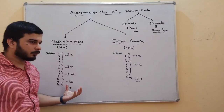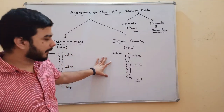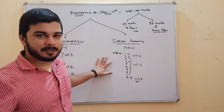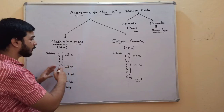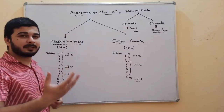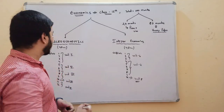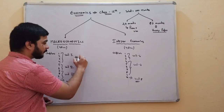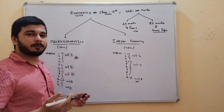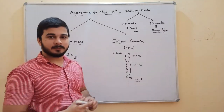In macroeconomics, you will have to study 10 chapters, and in Indian economics, you will also have to study 10 chapters. Now, in macroeconomics, we will start the next video with Unit 1, which is national income — one of the most important chapters of this economics subject for class 12.